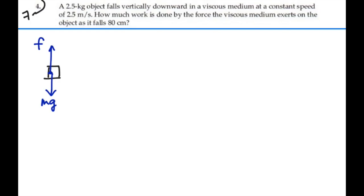And it's moving at constant velocity, so the acceleration in this case is actually equal to zero. So there is no net force on this object, which would mean that the frictional force would be equal to the weight as it's moving down in this viscous medium. So there's our free-body diagram.